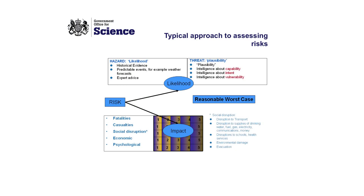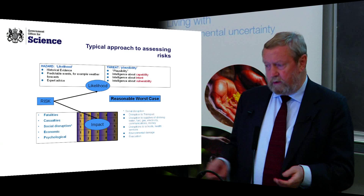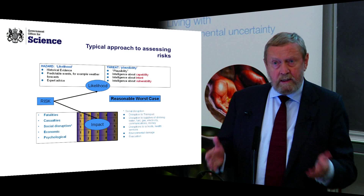We try to assess likelihood in these two ways. The threat issues from counter-terrorism are massively less grounded in science than those dealing with historical events and the likelihood of events. But in terms of impact, we look at the likely impact in terms of fatalities, casualties, social disruption, economic effects, and psychological ones. Those are the two sorts of pieces of evidence that go into developing the National Risk Register.